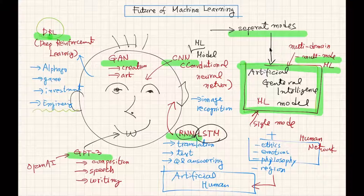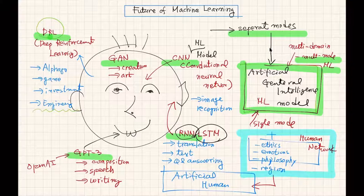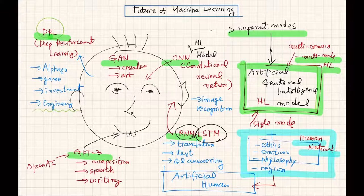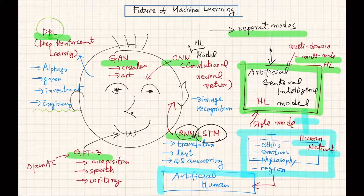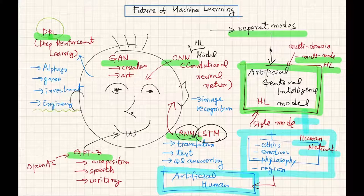In the more distant future, like 20 or 30 years later, if we use artificial general intelligence incorrectly, it will become a bad machine. So we have to combine it with a human network that includes ethics, emotions, philosophy, and religion. If we combine artificial general intelligence with human network, eventually we will be able to produce artificial human. In technological sense, this is the overall perspective of machine learning's future.